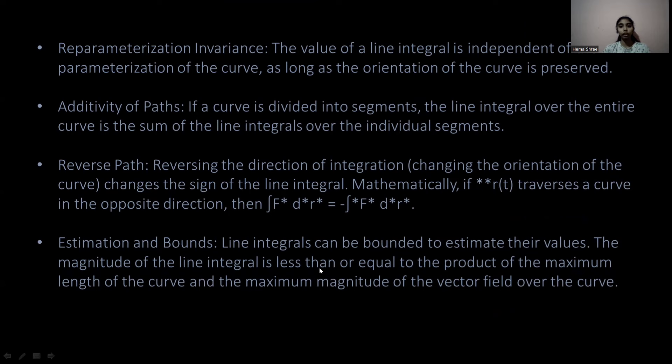The fifth property is reversing the direction of integration: changing the orientation of the curve changes the sign of the line integral. Mathematically, if r(T) traverses a curve in the opposite direction, then the integral of F·dr equals minus the integral of F·dr. The sixth property is estimation and bounds: line integrals can be bounded to estimate their values. The magnitude of a line integral is less than or equal to the product of the maximum length of the curve and the maximum magnitude of the vector field over the curve.